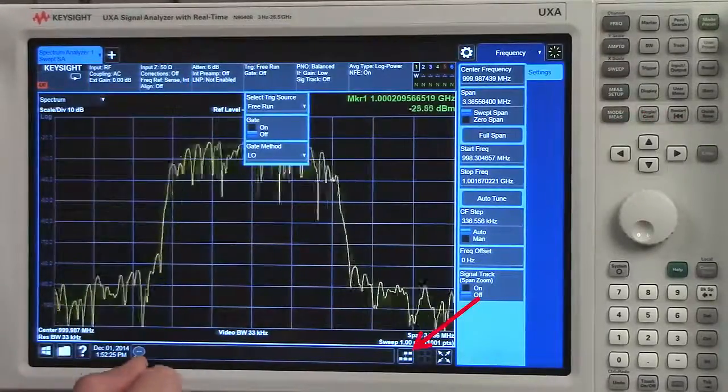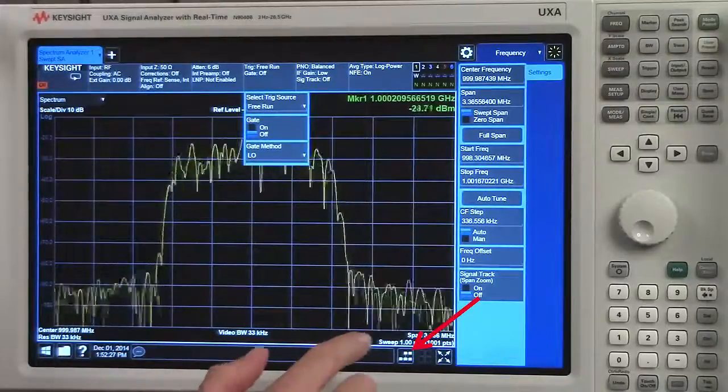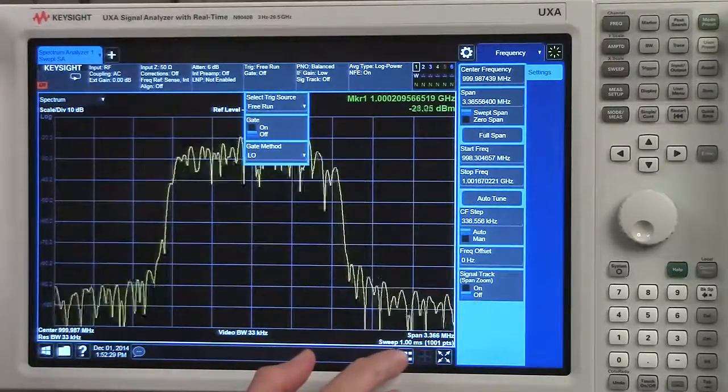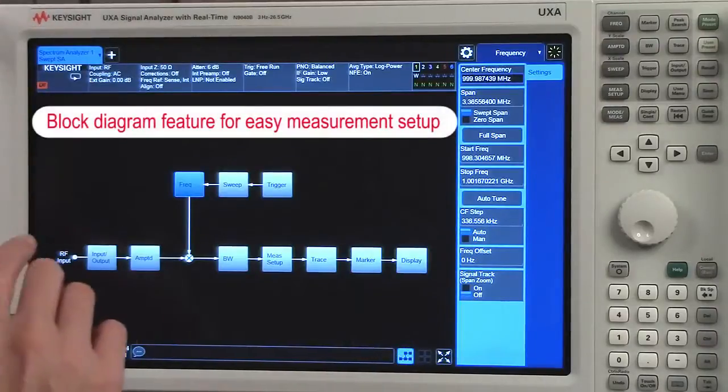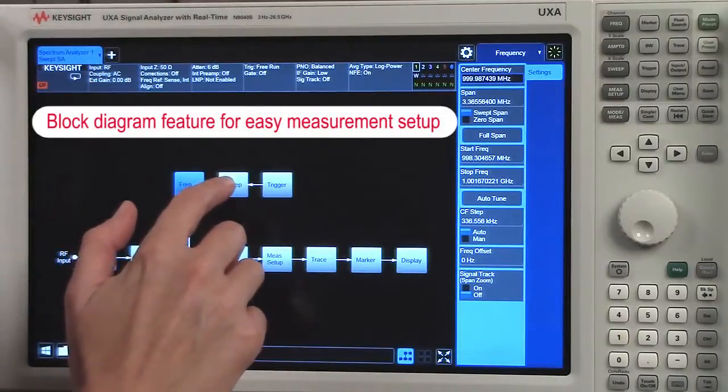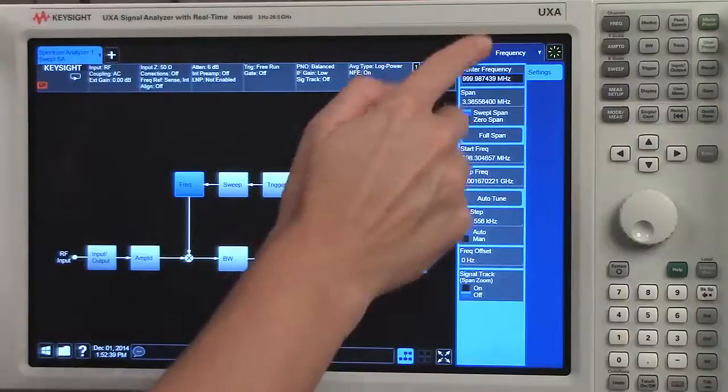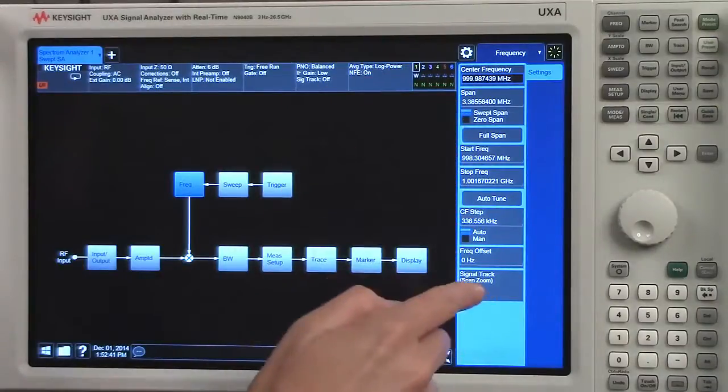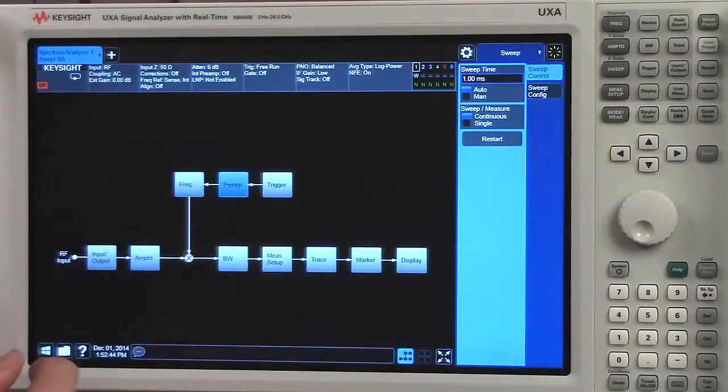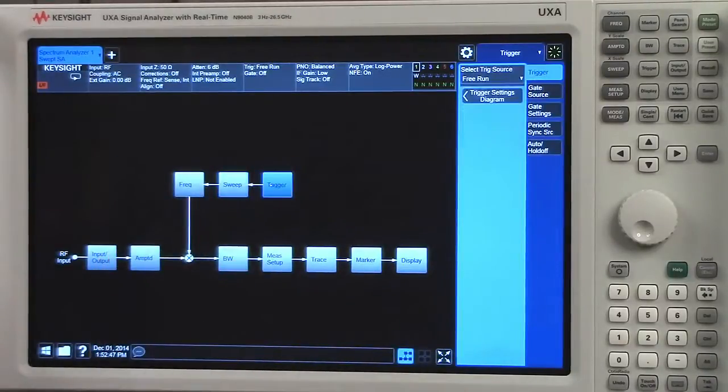Or we have another feature, our block diagram feature, that's this icon at the bottom of the screen. As you select different parts of the block, so right now we're in frequency, you can see our frequency menu is displayed. I select sweep, we have our sweep settings, trigger, trigger settings. This is an easy way to set up your measurement.